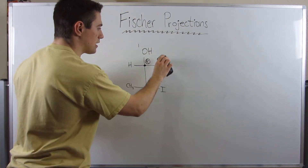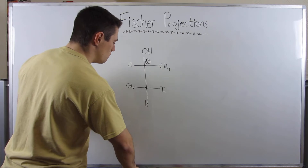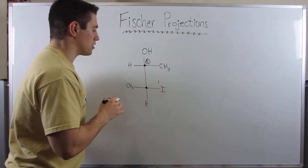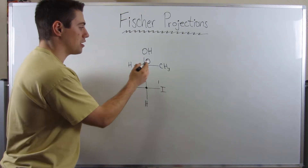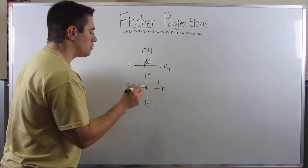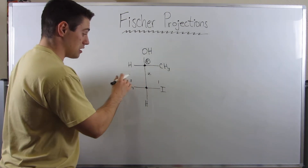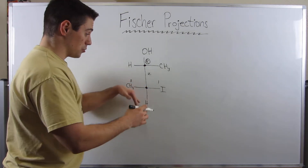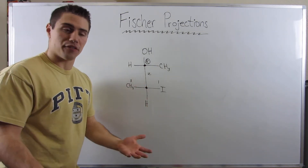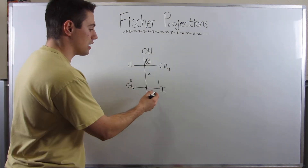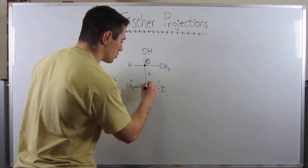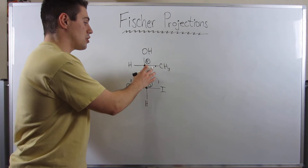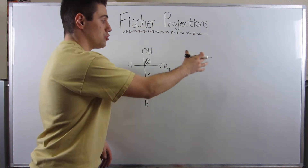Now let's check out this carbon. Iodine is easily the highest priority group. Again, we kind of have a CH3 scenario like we did above, so the chain above is number two. CH3 is the third priority group. This time, hydrogen is on the below — the group going down — so he's actually facing away from us. We can just go ahead and straight up apply R and S. It looks like S, and sure enough, it is. Let me show you how to go from a Fischer Projection to a bond-line structure.